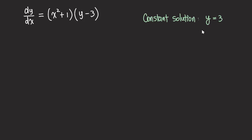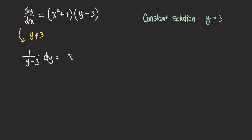You can verify that easily, but we're not going to spend time doing that here. Making the assumption that y is not equal to three, then we get one over y minus three on the left side — so we're not dividing by zero. Now we get the dy here, and that's equal to x squared plus one. There was a dx here, so we multiply by dx on both sides, getting the dx on this side.